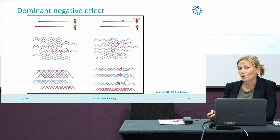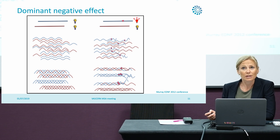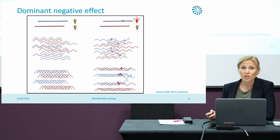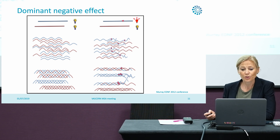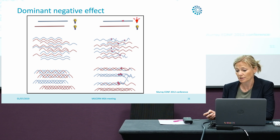So what is this dominant negative effect? If we have a glycine substitution or a splicing variant, an aberrant alpha chain is formed. And because we have three of these chains in a collagen 3 molecule, we have a majority of the collagen 3 molecules with an aberrant alpha chain.